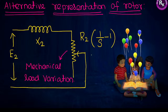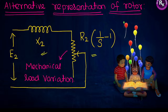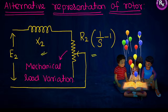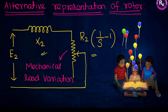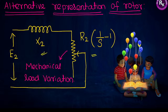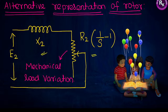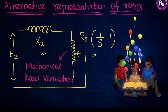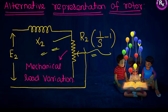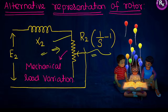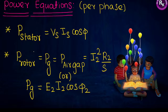The rotor equivalent circuit can be redrawn in an alternative form. The mechanical load on the induction motor is continuously varying, which affects load current, load torque, and power delivered. The mechanical power variation can be electrically represented in the equivalent circuit. This alternative representation, with load as a variable electrical element, is a convenient form for analysis of the induction motor equivalent circuit.